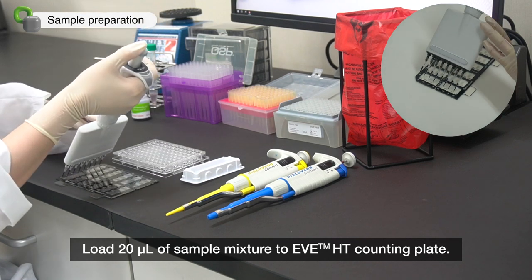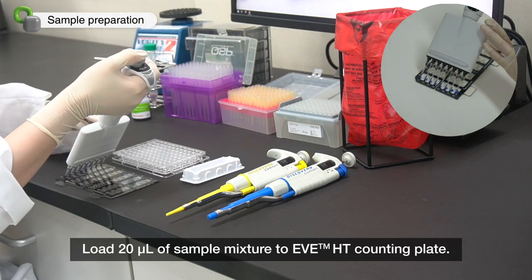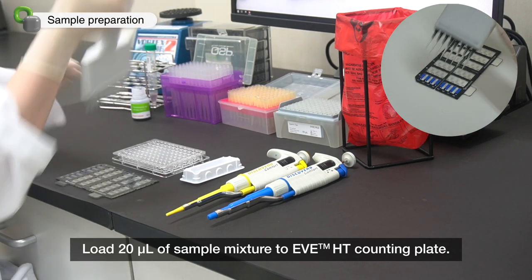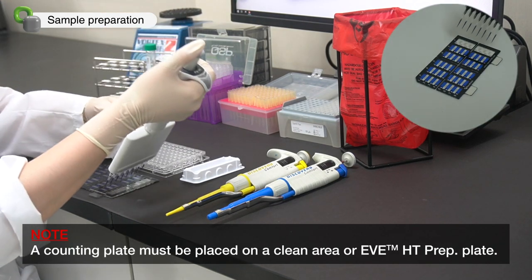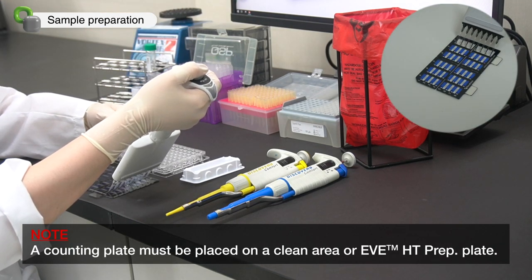Load 20 microliter of sample mixture to EVE-HT counting plate. A counting plate must be placed on a clean area or EVE-HT prep plate.